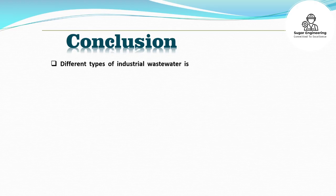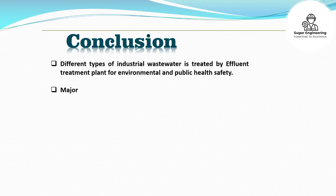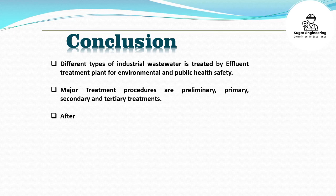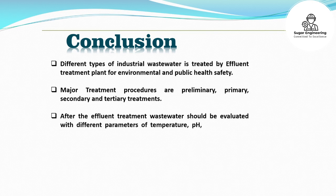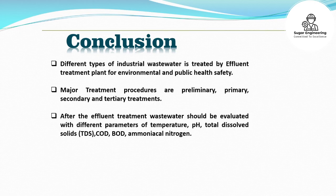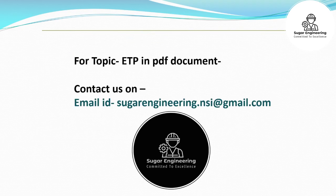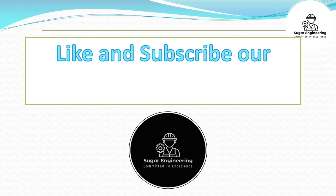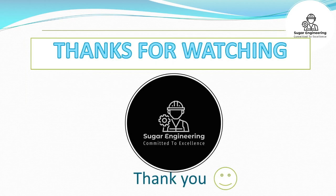Conclusion: Different types of industrial wastewater are treated by effluent treatment plant for environmental and public health safety. Major treatment procedures are preliminary, primary, secondary, and tertiary treatments. After effluent treatment, wastewater should be evaluated with different parameters of temperature, pH, total dissolved solids (TDS), COD, BOD, and ammoniacal nitrogen. For the ETP topic in PDF document, contact us at sugarengineering.nsi@gmail.com. Like and subscribe our channel for more videos. Thanks for watching.